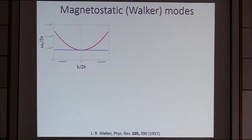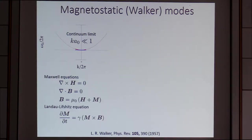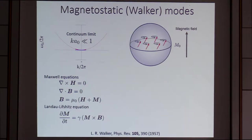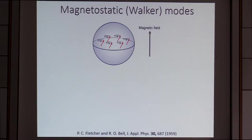We are interested in the magnetostatic regime, the so-called long wavelength limit, where the Maxwell equations become static except for the magnetization M. The magnetization follows the Landau-Lifshitz equation — that's the only dynamical part. Applying a DC magnetic field, we can linearize this complicated coupled equation, and as a result we can set up the so-called Walker equation with respect to this magnetic potential. The solutions are known as Walker modes, and the simplest one is the Kittel mode — a uniformly oscillating mode.